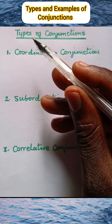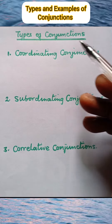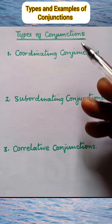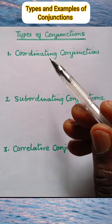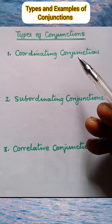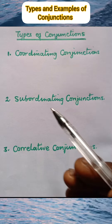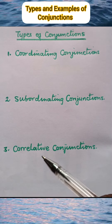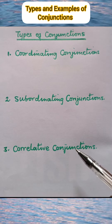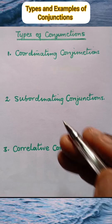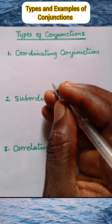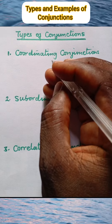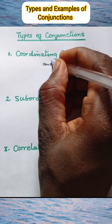Types of conjunctions. We have coordinating conjunctions, subordinating conjunctions, and correlative conjunctions. Let us look at examples of coordinating conjunctions.